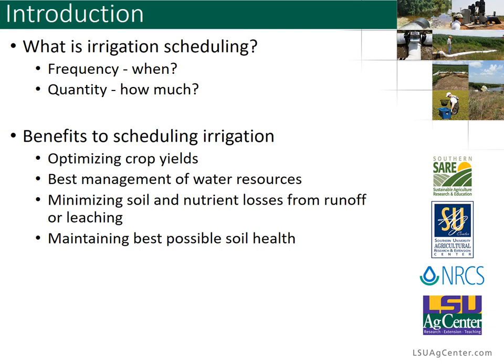When we talk about irrigation scheduling, we're referring to the frequency — or when irrigation should be applied — as well as the quantity, or how much irrigation should be applied. Both of those things should be calculated every time that you want to apply irrigation so that you are as efficient as possible with our natural resources.